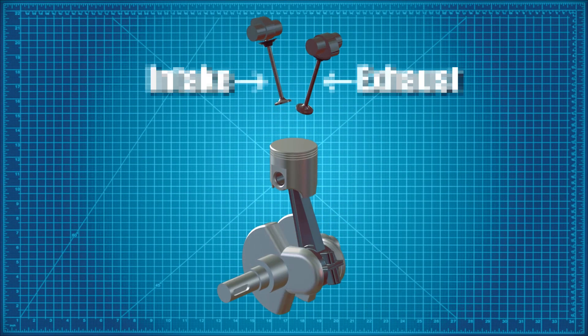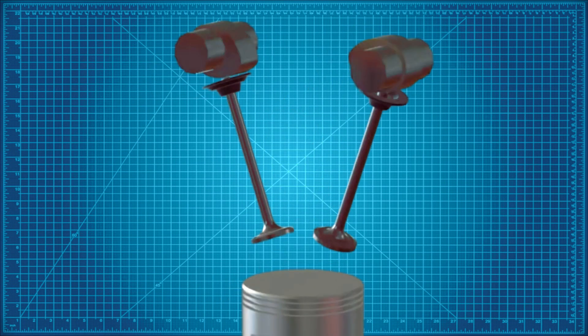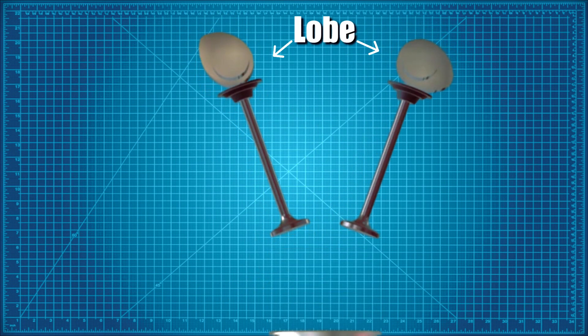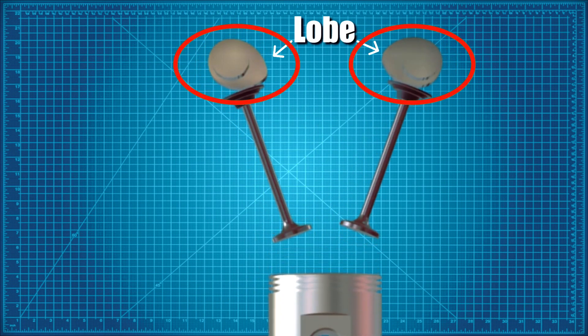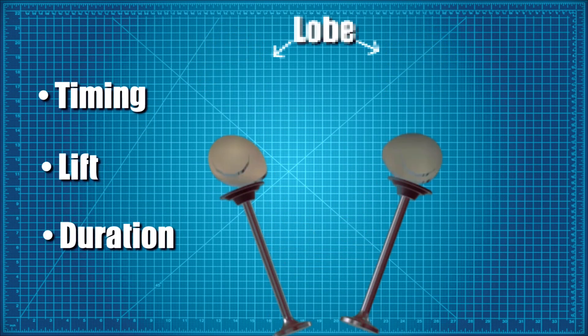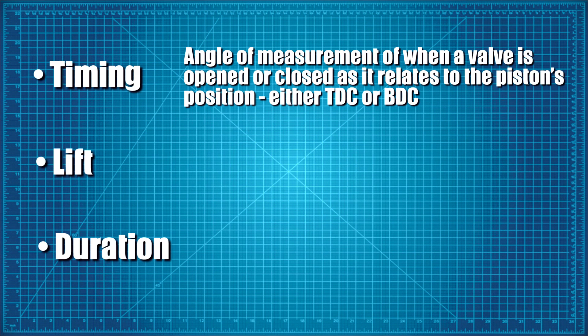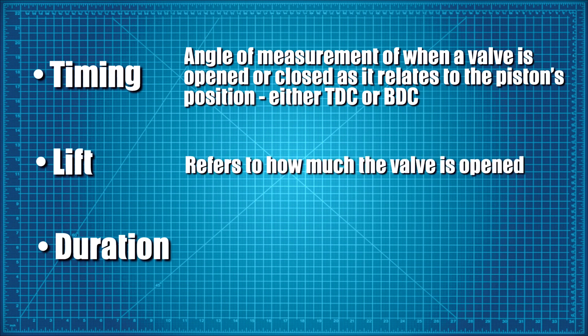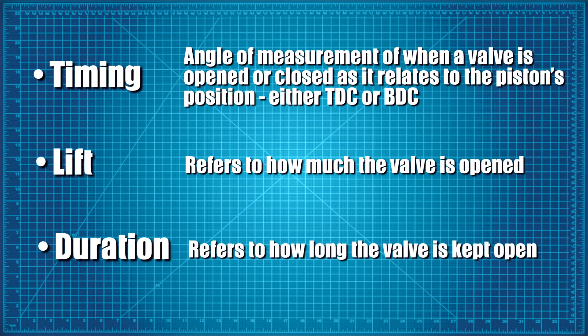In a standard four-stroke engine, the intake and exhaust valves are actuated by lobes on a camshaft, and the shape of the lobes determine the timing, lift, and duration of each valve. Timing refers to the angle of measurement of when a valve is opened or closed as it relates to the piston's position, either top dead center or bottom dead center. Lift refers to how much the valve is opened, and duration refers to how long the valve is kept open.